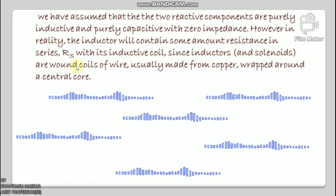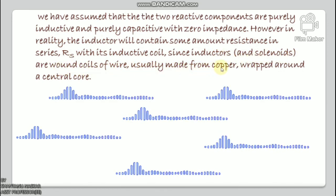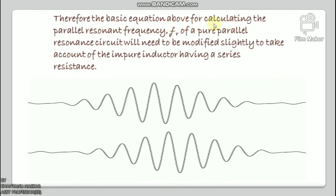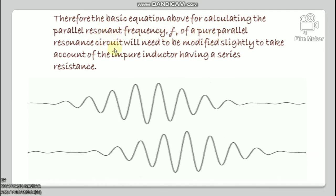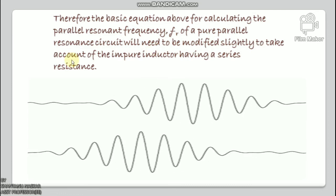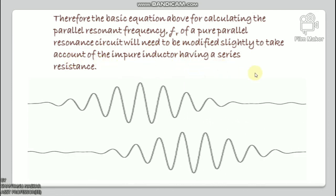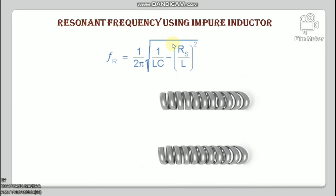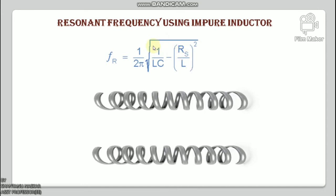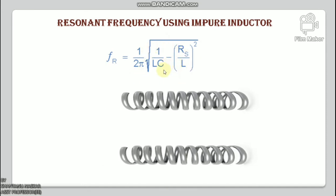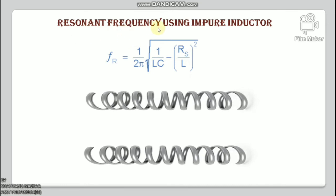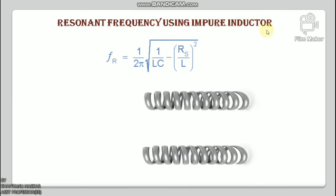While using pure or impure components in a series RLC circuit does not affect the resonant frequency calculation, in a parallel RLC circuit it does. We have assumed the reactive components are purely inductive and purely capacitive. However, in reality an inductor contains some series resistance RS, since inductors and solenoids are wound coils of wire. Therefore the basic formula for parallel resonant frequency must be modified: fr = (1/2π)·√(1/(LC) − (RS/L)²).